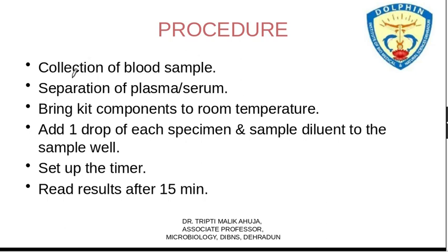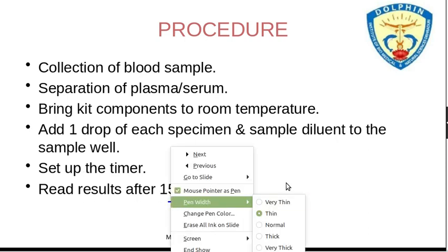For the procedure, first collect the patient sample and separate plasma or serum. Remove the kit from the refrigerator and allow it to reach room temperature. Place the cassette and add one drop of sample to the sample well, followed by one drop of sample diluent using the plastic dropper provided. Set a timer and read results after 15 minutes.